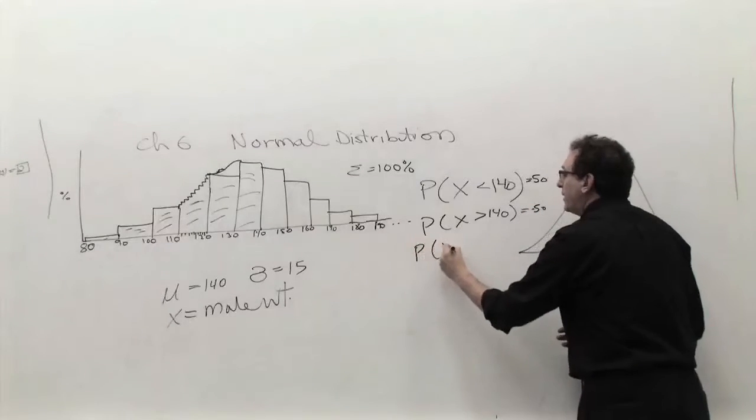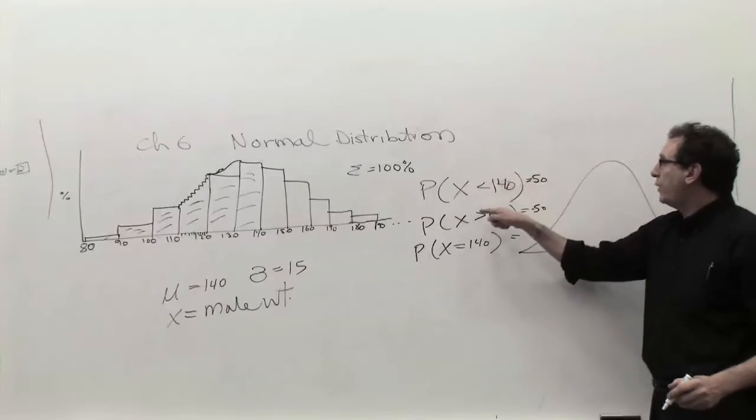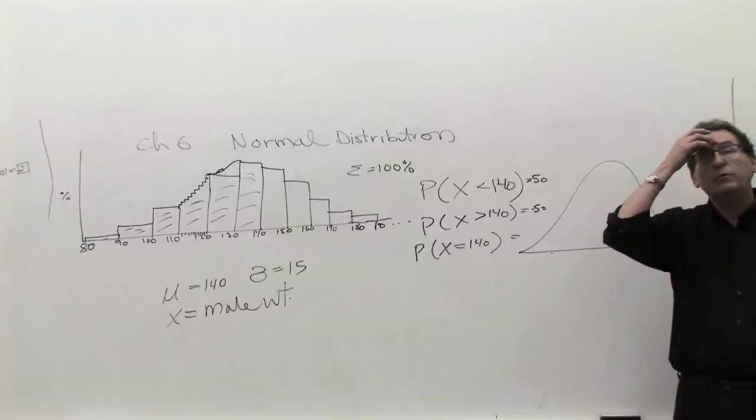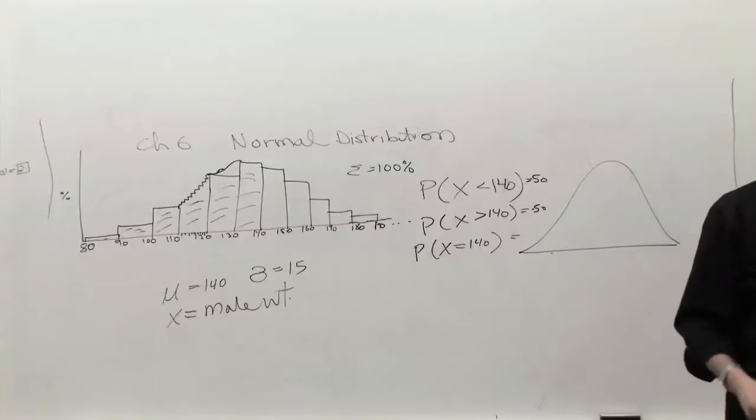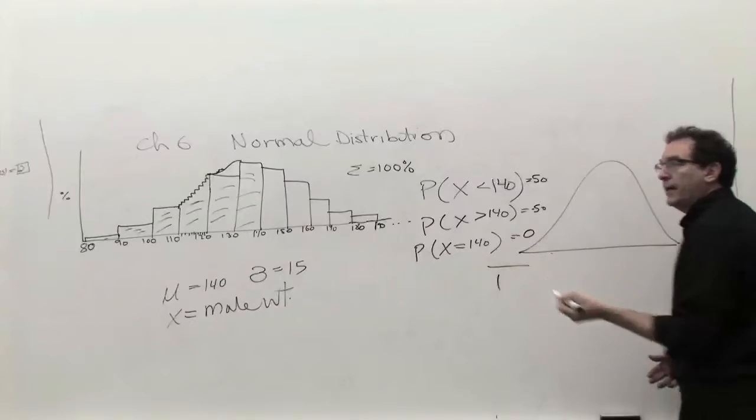Now comes a little bit of a trick question. How many people weigh exactly 140 pounds? Now, these three categories, less than, greater than, or equal, should basically exhaust all the possibilities. You should add up to 100%. So what does this piece have to be? It has to be 0.